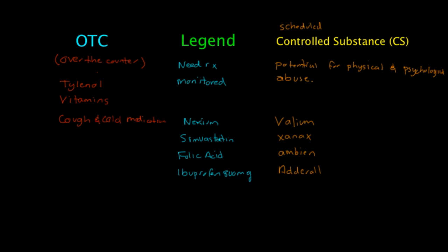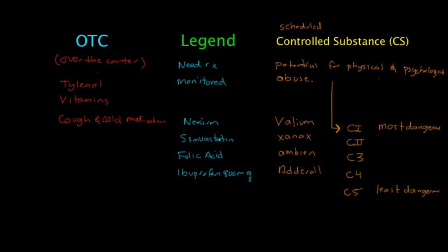Within controlled substances, there are different types. We'll go over this in another video, but just so you have a heads up: there's C1, which is class 1, then class 2, C3, C4, and C5 — with C1 being the most dangerous and C5 being the least dangerous. By dangerous, I mean the potential for physical and psychological abuse. These are all monitored with a different set of rules for refills and dispensing.